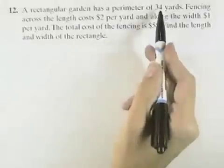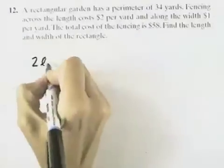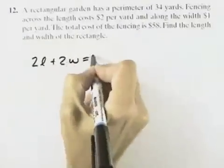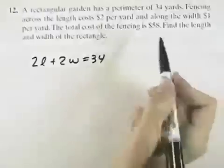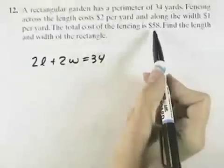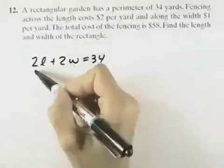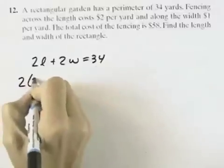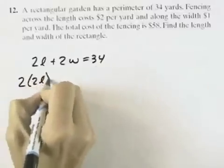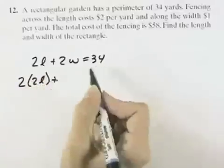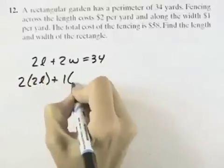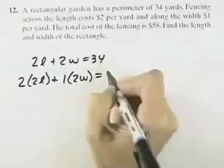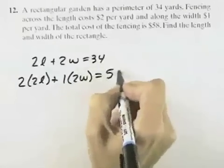Using the concept of perimeter, we have that 2 times the length plus 2 times the width will equal 34. Looking at the concept of the cost of the fencing, the length costs $2 per yard, so we'd have 2 times twice the length, and the width costs $1 per yard, so we'd have 1 times twice the width, which would equal a total cost of $58.